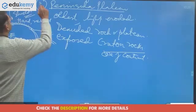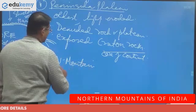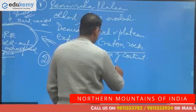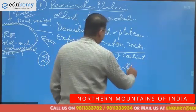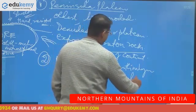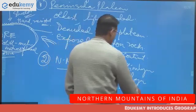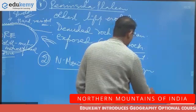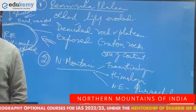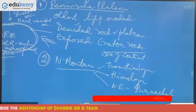The second important physiographic unit of India is the Nether Mountains. These include the trans-Himalayan mountains, the Himalayan mountains, and in the northeast, the Purvanchal Hills. Together these are called the Nether Mountains of India.